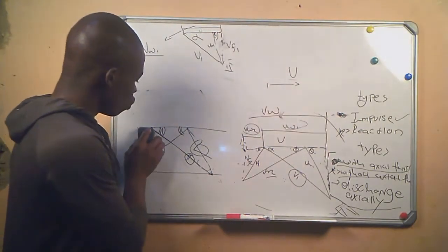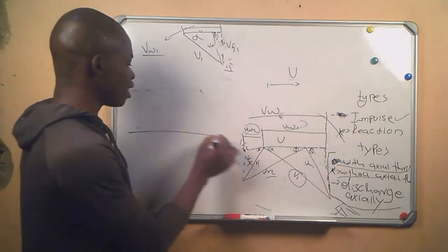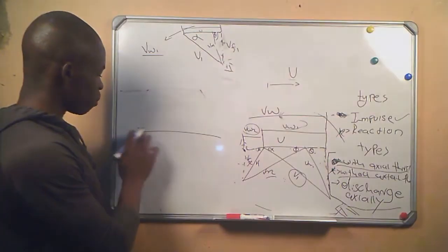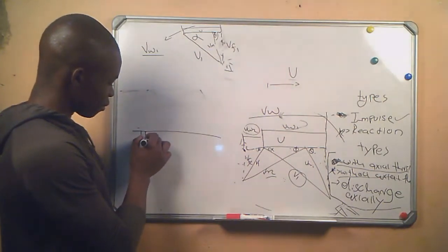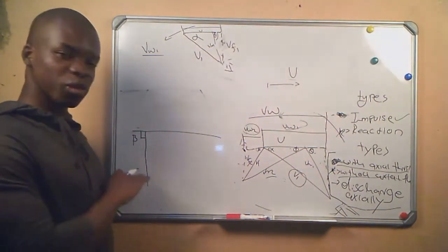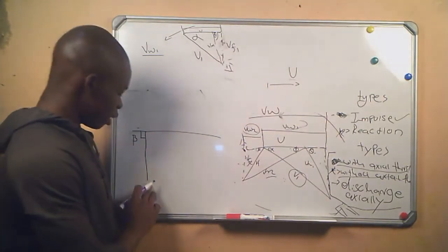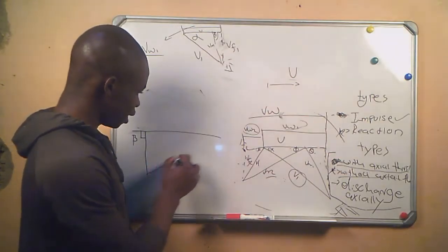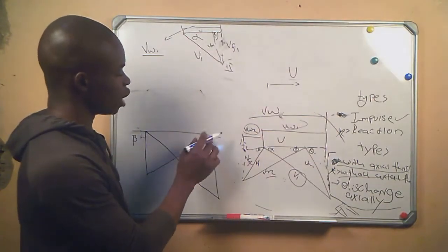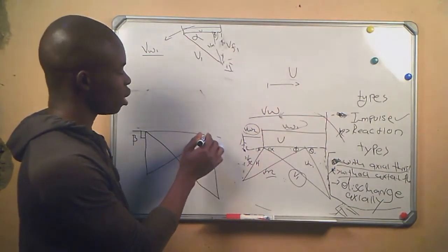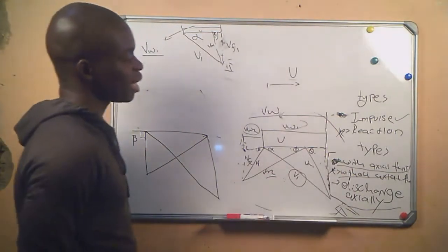For the velocity diagram of a turbine that discharges axially, one thing to keep in mind is that the angle beta will always be 90 degrees. Before reading any other information they gave you, always start with this — it will always be 90 degrees — and then take it from there to determine what other information you are given.